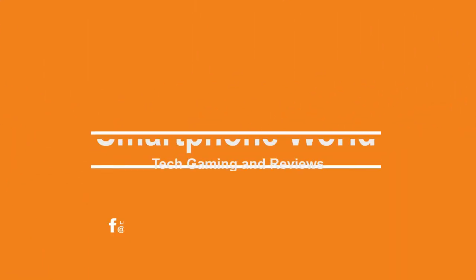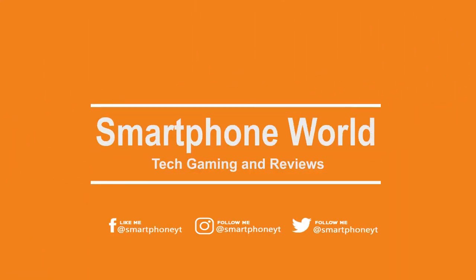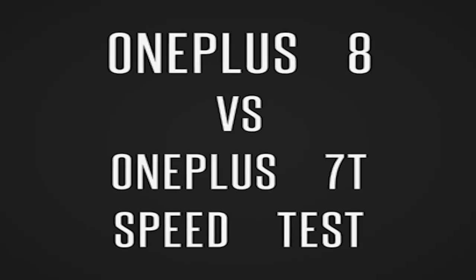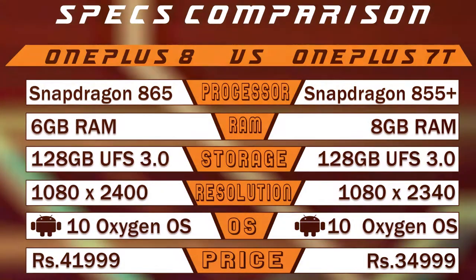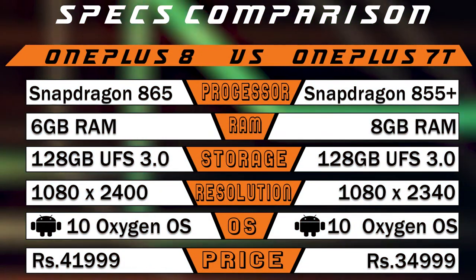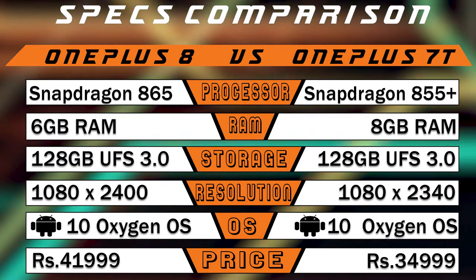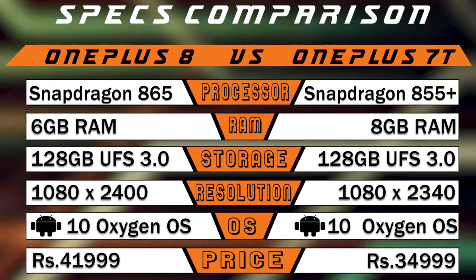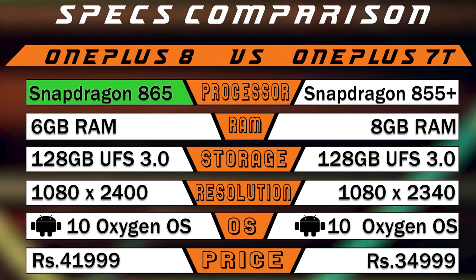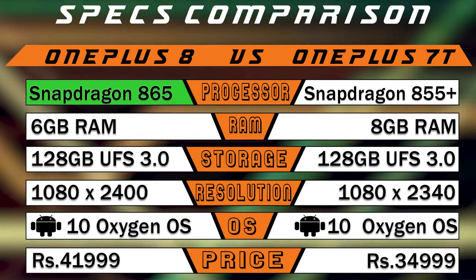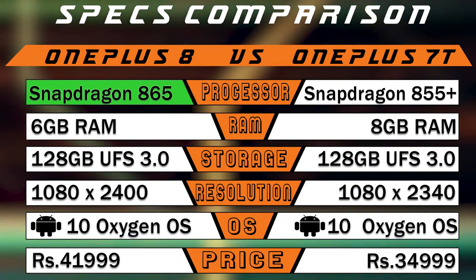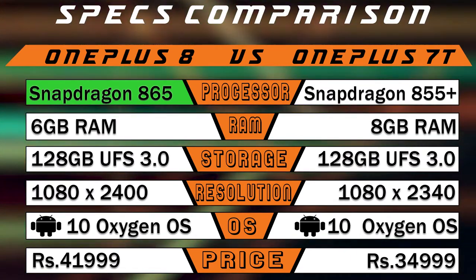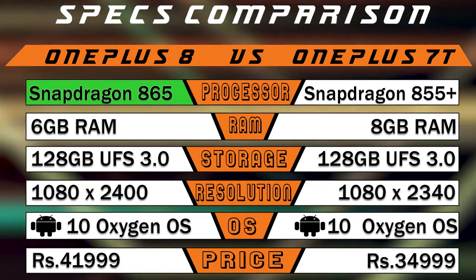In this video, we will see the performance of OnePlus 8 and OnePlus 9. In the OnePlus 8, we have a flagship Snapdragon 865G. In the OnePlus 9, we also have a flagship Snapdragon 865G. We have UFS 3.1 storage, but we have a different RAM version. In the OnePlus 8, we have 6GB RAM.